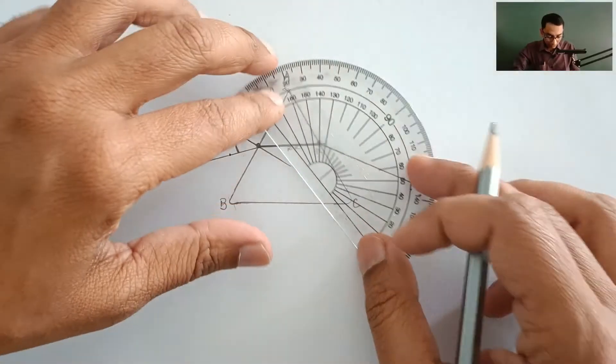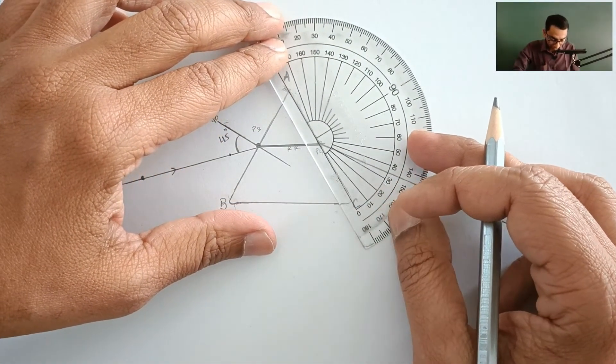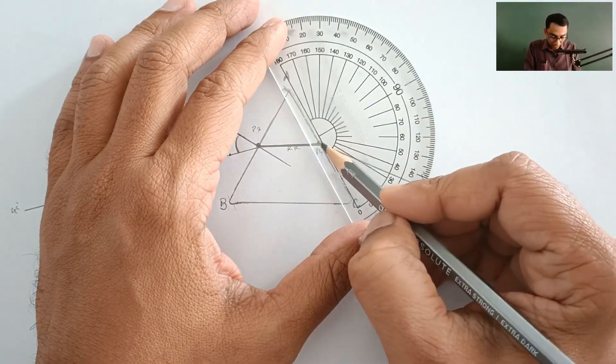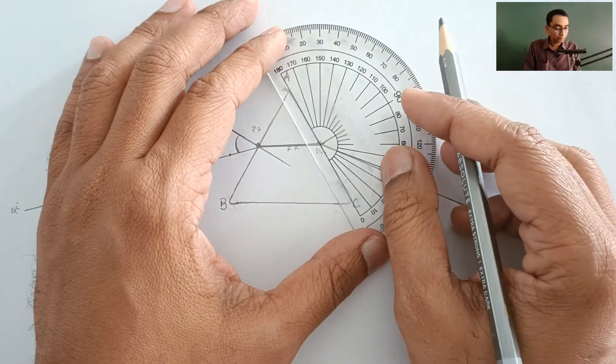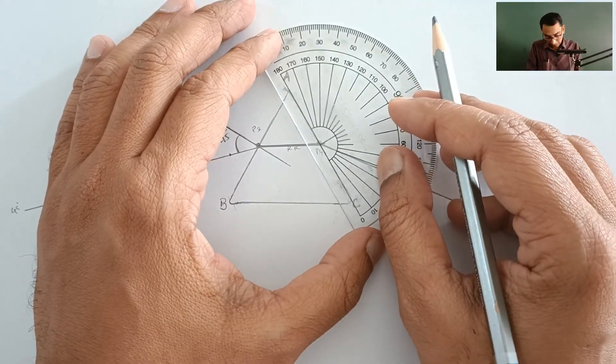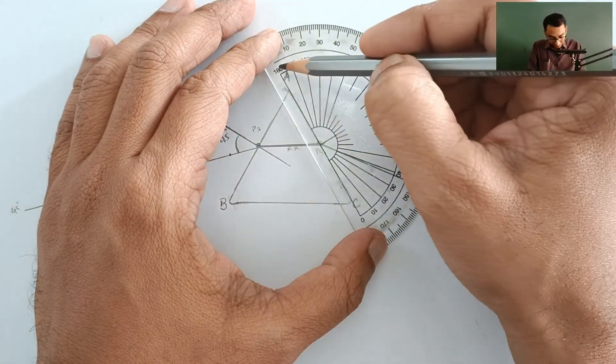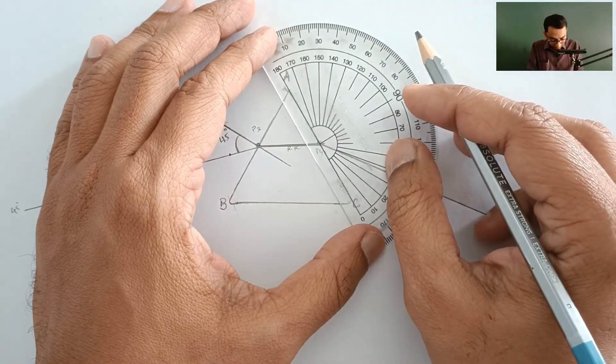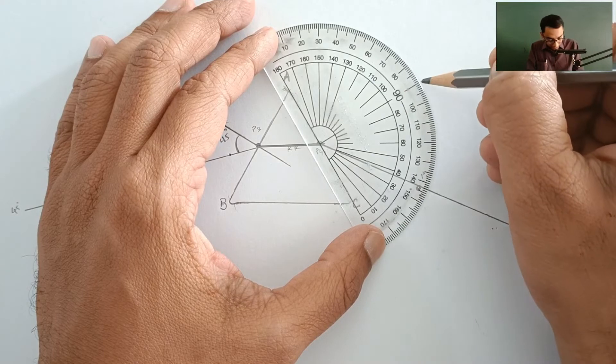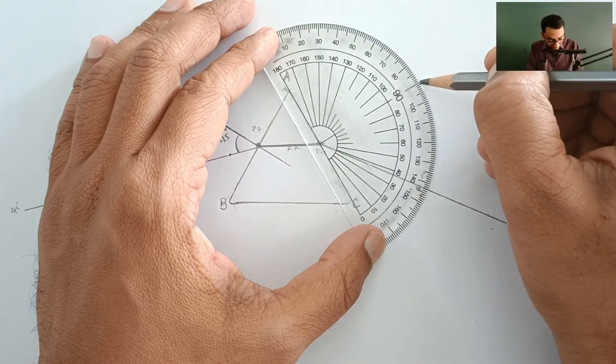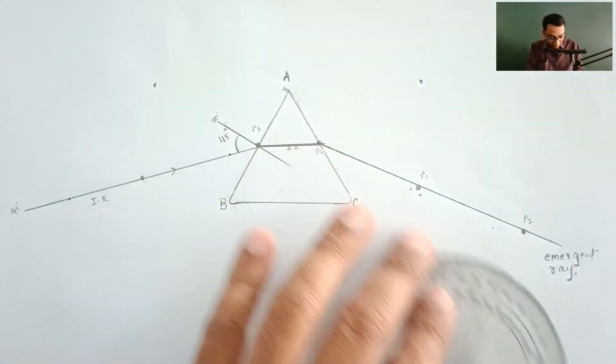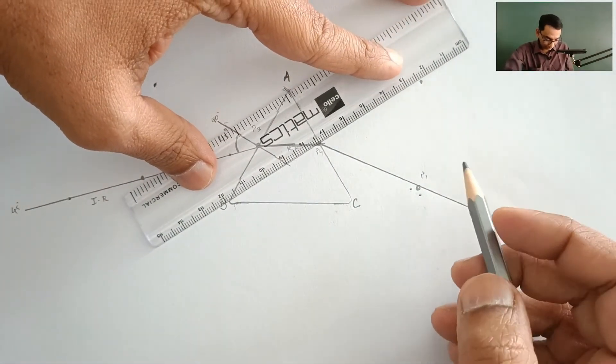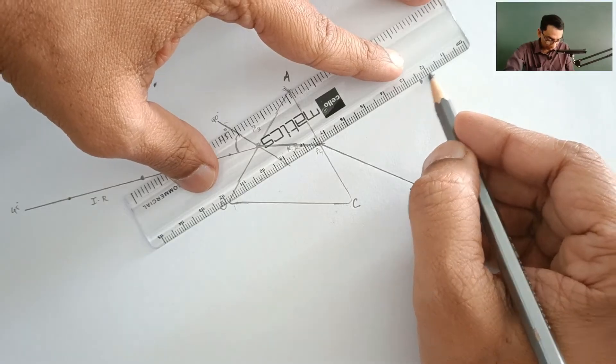Now very carefully I am going to place the protractor back at surface AC and this point should be matching with this point like this. This line of the protractor should match with surface AC. Now pointing at 90 degrees, this is my normal. I am going to join these two points. Let the normal be long enough.